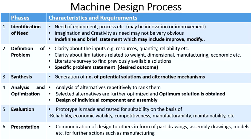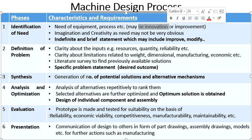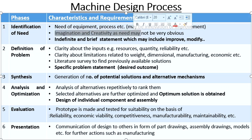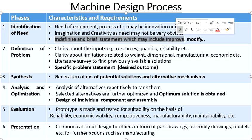We need to understand the machine design process. The machine design process may be divided into a number of stages or phases. The first phase is identification of need. We have to identify the need of an equipment or a process — it might be innovation or improvement. Imagination and creativity are the two prime requirements for this stage. At the end of this stage we get an indefinite and brief statement which may include words like 'improve' or 'modify,' for example, 'improve the existing machine.'